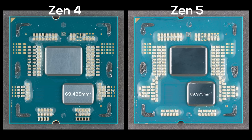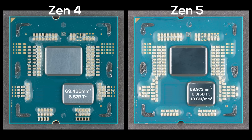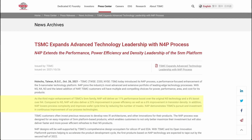The impressive part is that AMD managed to pack a lot more transistors into the same chip size. The Zen 5 CCD contains 8.315 billion transistors, a 26.6% increase over the 6.57 billion in Zen 4. As a result, Zen 5 has a transistor density of 118.8 million transistors per mm² compared to only 94.6 million on Zen 4. That's a much larger increase than the 6% density uplift TSMC claims with N4P over N5P. Something is going on here.